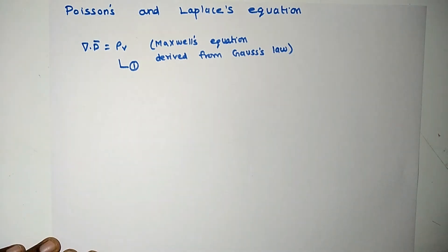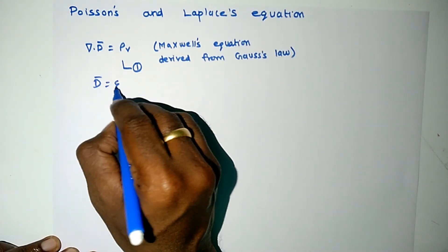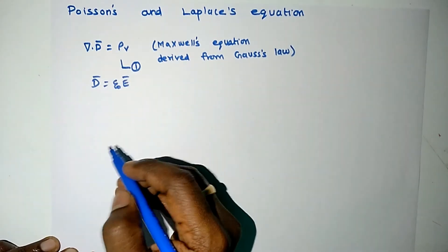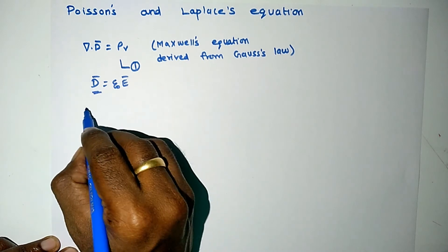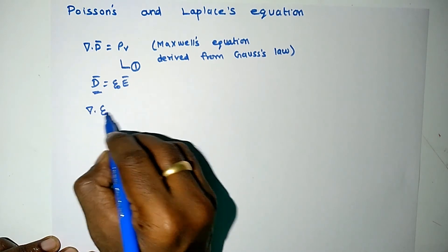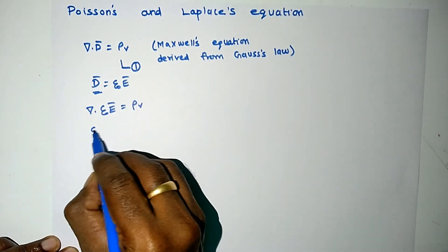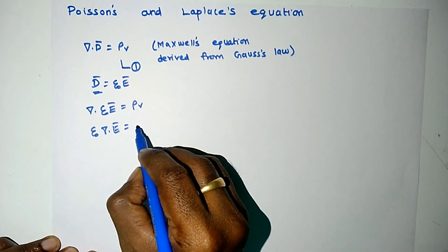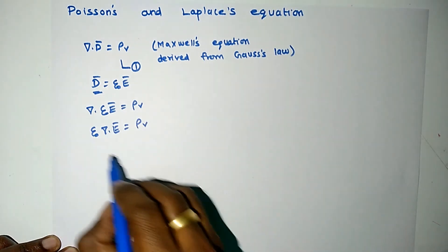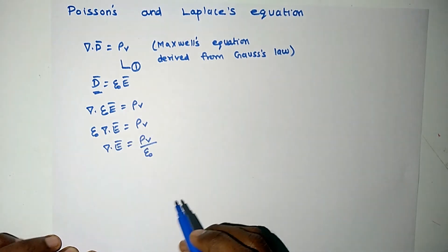The relationship between electric flux density and electric field intensity can be related as D vector is equal to epsilon naught E vector. So we can substitute this D vector in equation number 1. So del dot epsilon naught E vector is equal to rho v. We can write epsilon naught del dot E vector is equal to rho v, so del dot E vector will be equal to rho v divided by epsilon naught.